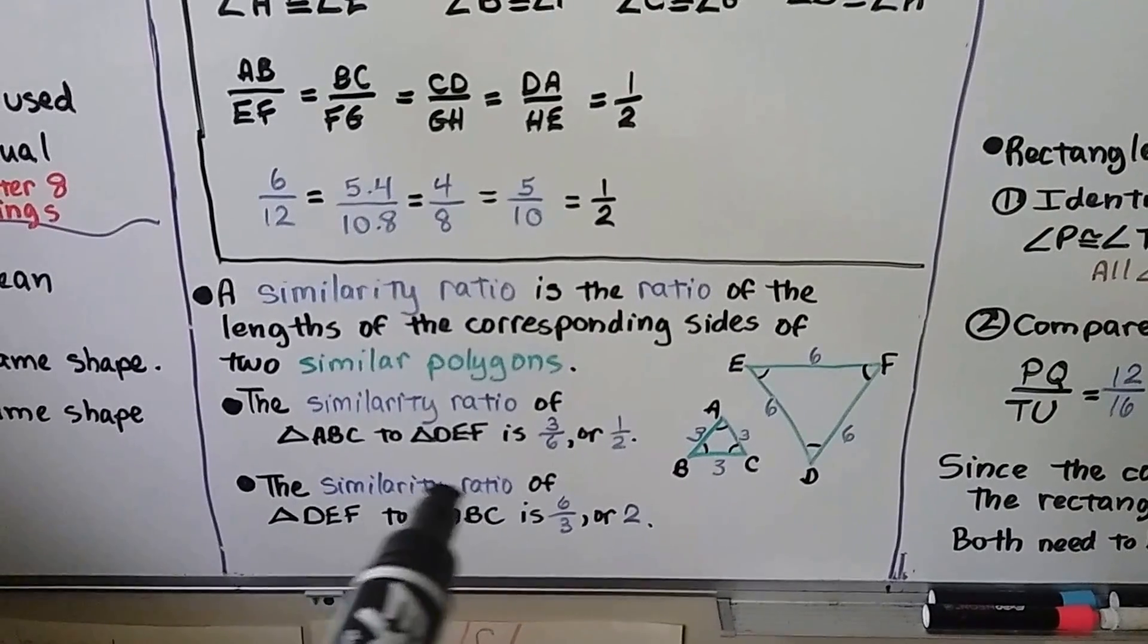Make sure to list corresponding vertices in the same order. If you're doing A, B, C, you want to do D, E, F in the same order. The order of the letters of the given polygons help identify corresponding sides and vertices. If ABCD is one figure and EFGH is another, and they're similar, then A corresponds to E, B corresponds to F, C corresponds to G, and D corresponds to H.